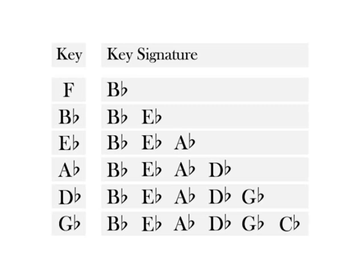The second to last accidental in B flat, E flat, A flat is E flat. Therefore, B flat, E flat, A flat is the key signature of E flat.